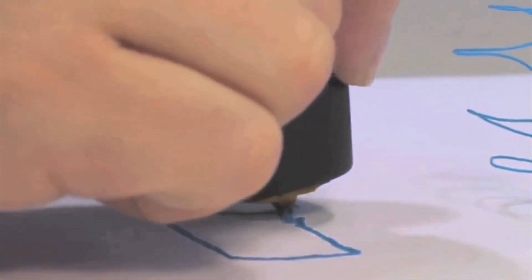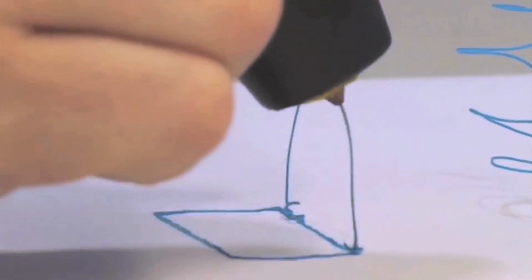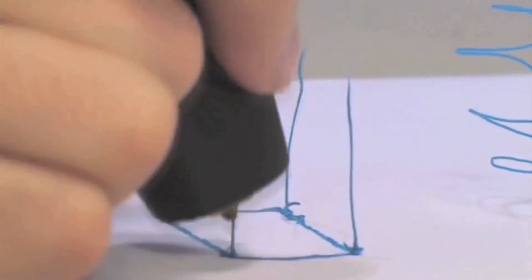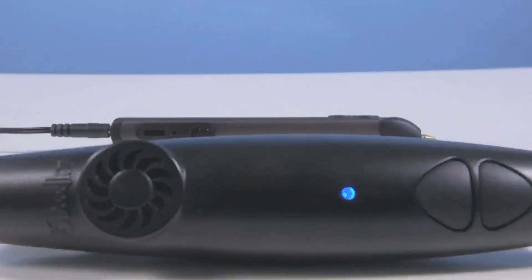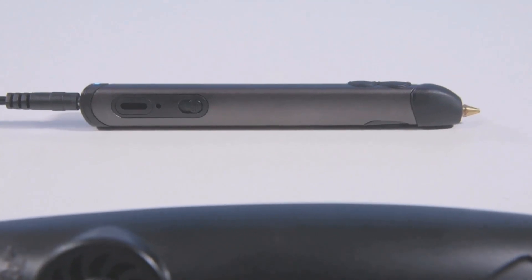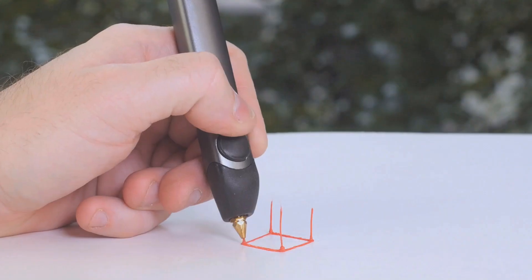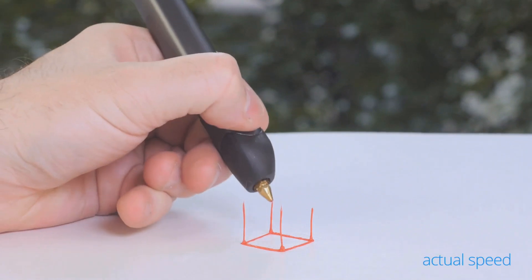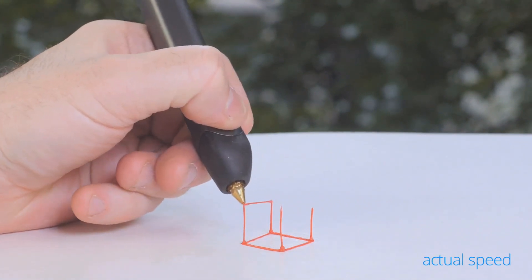When we first launched the 3Doodler, we asked the world to imagine a pen that could literally draw in the air. Two years on, we've made the world's first 3D printing pen even better, with a new and improved version that's slimmer, lighter, quieter, and even easier to use.